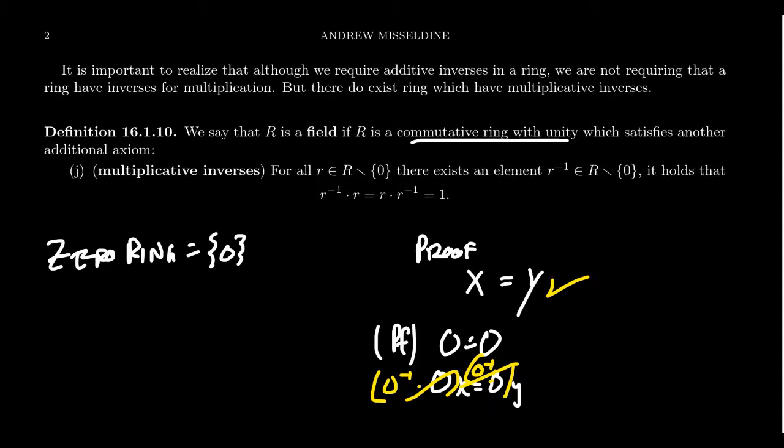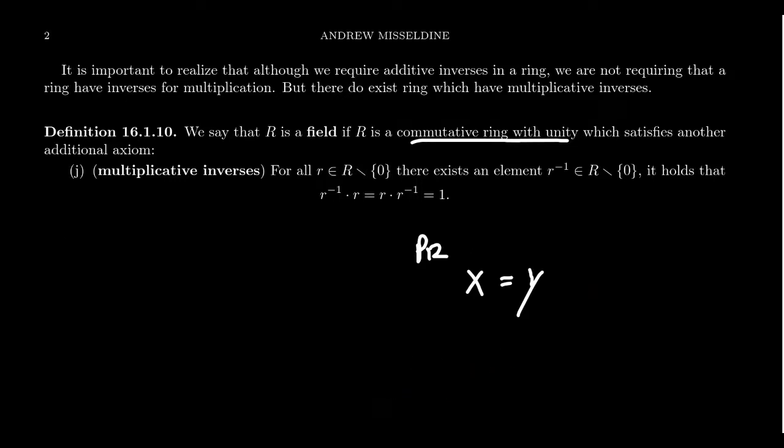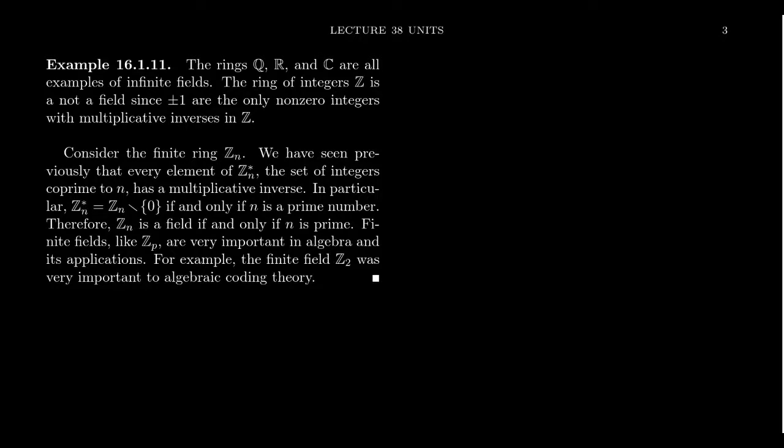So only the zero ring could be a ring for which zero is invertible. And that's kind of a cheap shot because the zero ring is the only ring for which zero is also the unity of the ring, which we don't allow that to be a commutative ring with unity. So it's imperative that we don't allow zero to be invertible. But if every other element of the ring is invertible, then we call this a field. So in every ring, we always have a well-defined operation of addition, subtraction, and multiplication. Fields are exactly those commutative rings for which a division is possible.